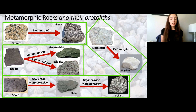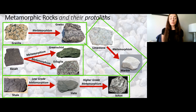Basalt can metamorphose to either form green schist or eclogite. Whether it forms either one of these is mainly dependent on the grade of metamorphism, which we'll talk about in the upcoming slides. You can also see that shale's metamorphic product is dependent on the grade of metamorphism.